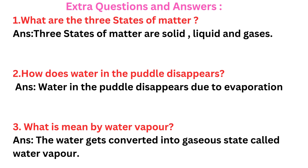Now we will see some extra questions and answers. Extra Question 1: What are the three states of matter? Answer: Solid, liquid, and gaseous. Extra Question 2: How does water in a puddle disappear? Answer: Water in a puddle disappears due to evaporation.